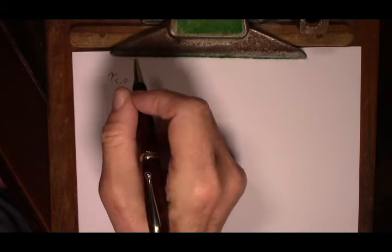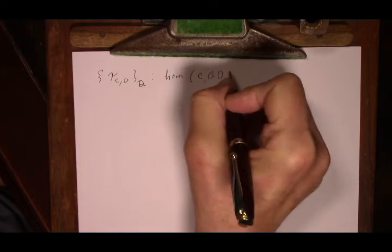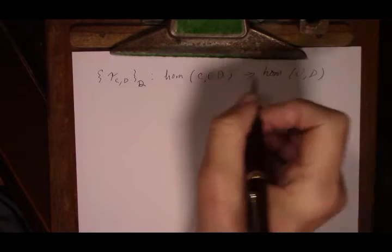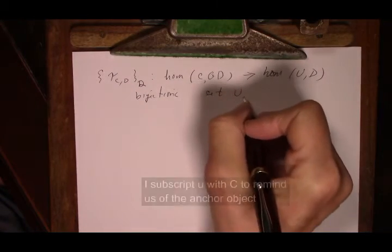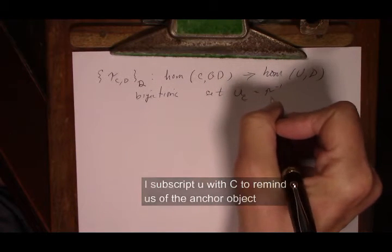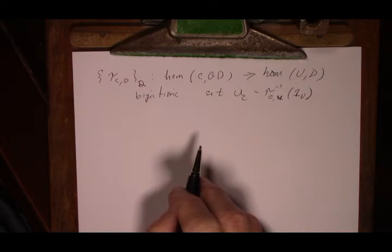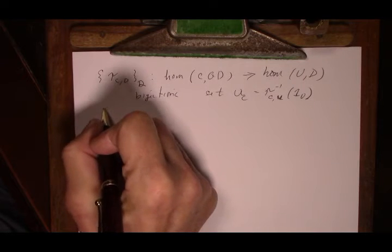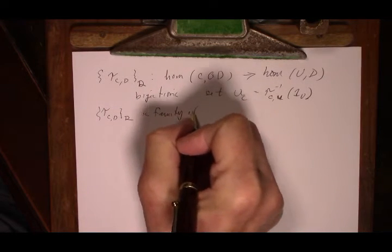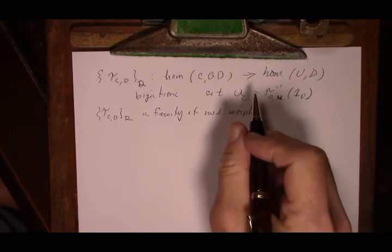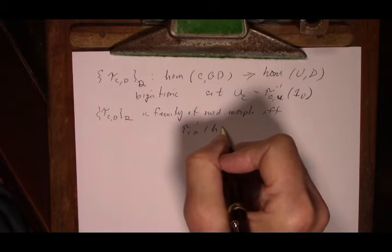Let's suppose we have a family of bijections taking HOM_C(C, GD) to HOM_D(U, D), and suppose these are bijections. We set u_C equal to tau inverse_CU of 1_U. We know that this family is a family of mediating morphisms for the appropriate universal pairs if and only if their inverse is given by this formula.